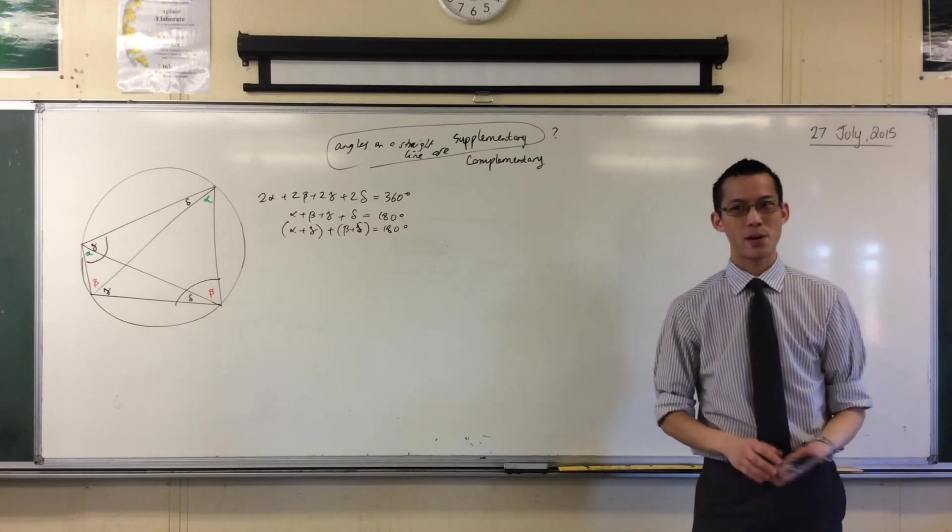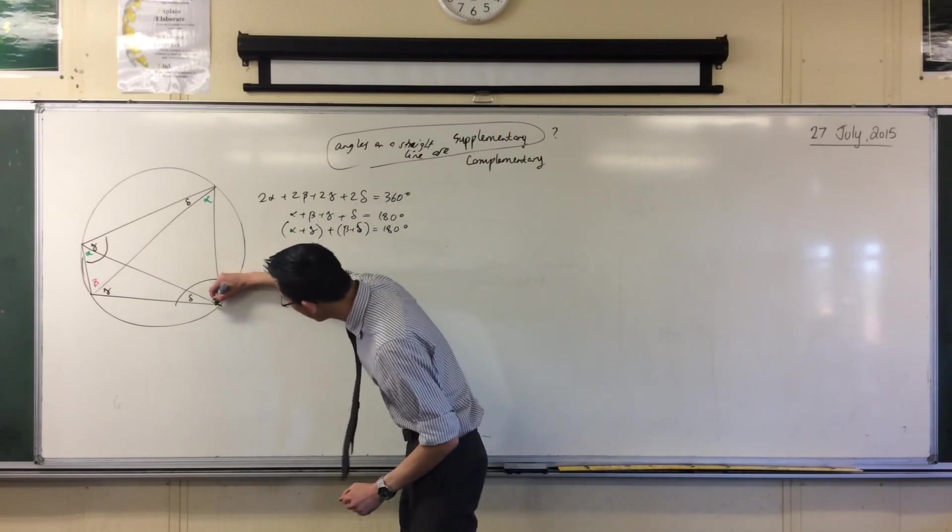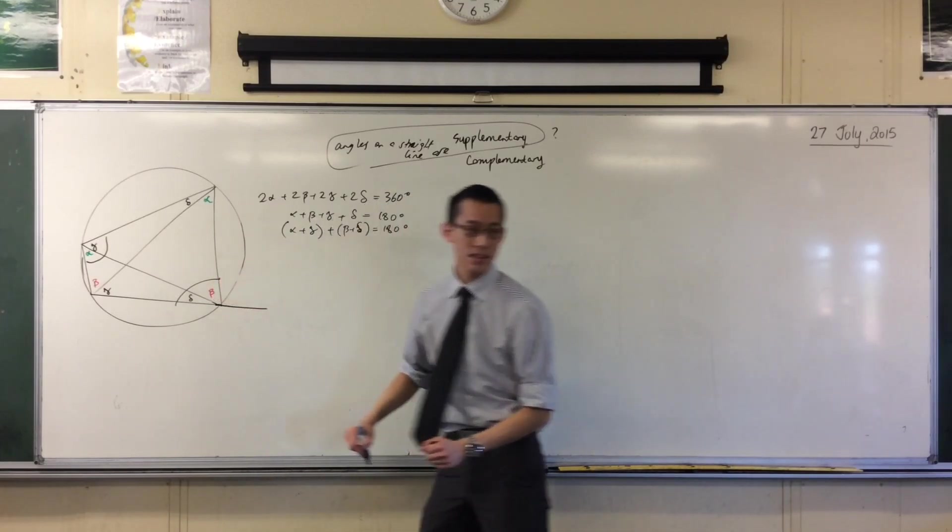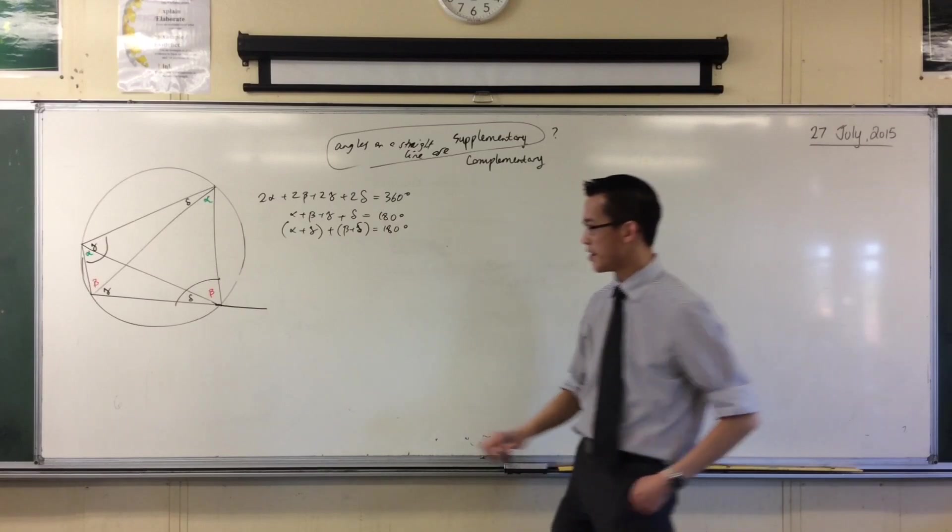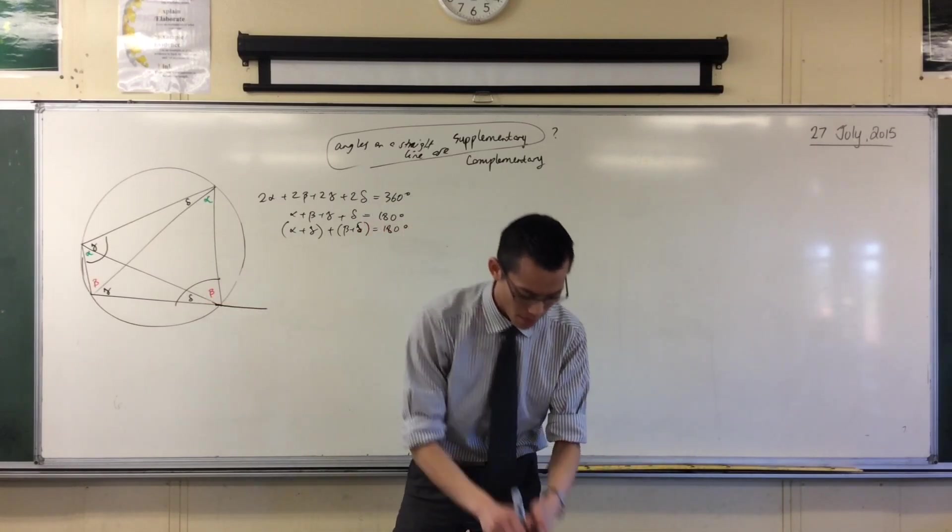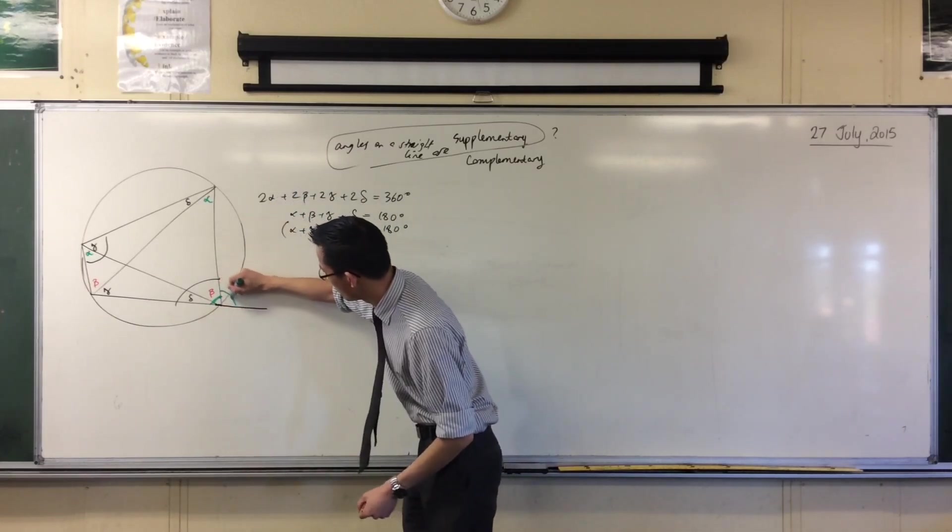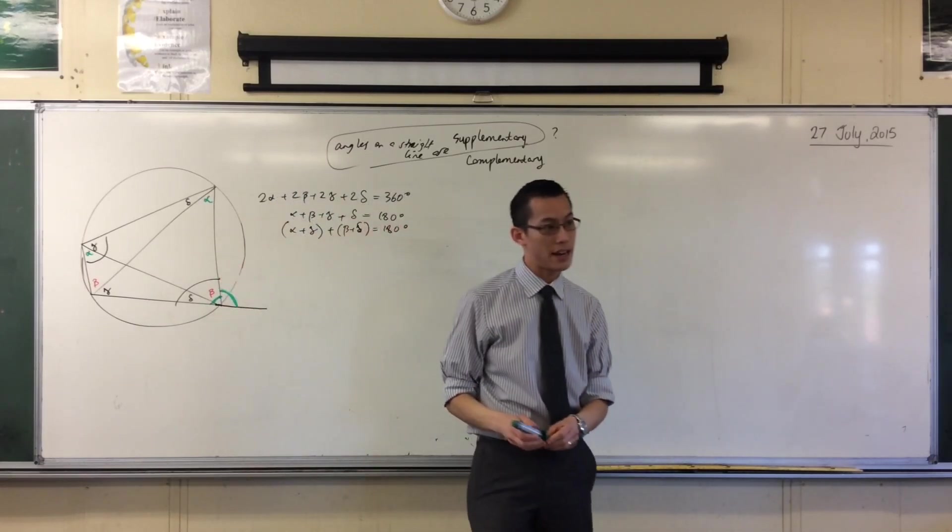Of course, it only takes a really quick step to know the other important thing about a cyclic quadrilateral, which is if you add an external angle over here, an exterior angle I should say. Because these two angles now add up to 180.